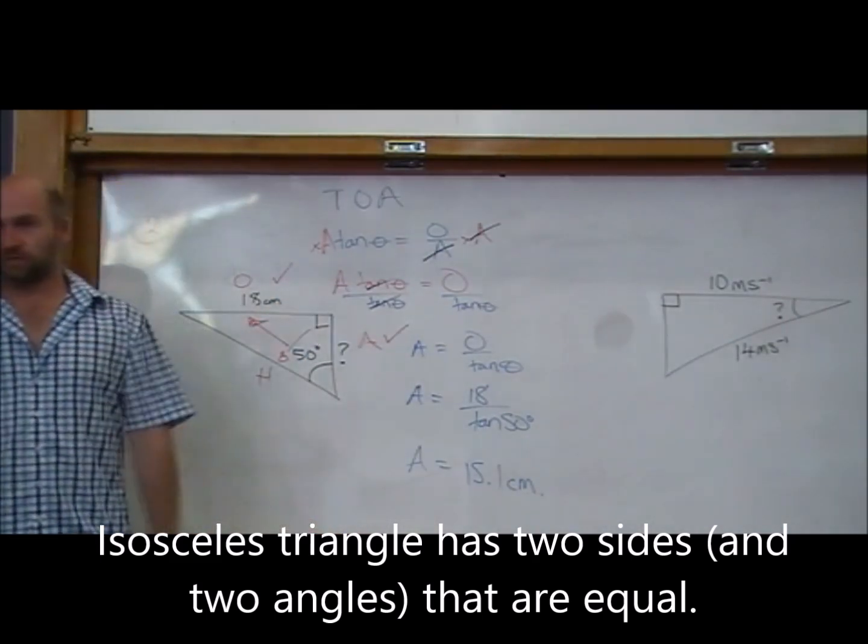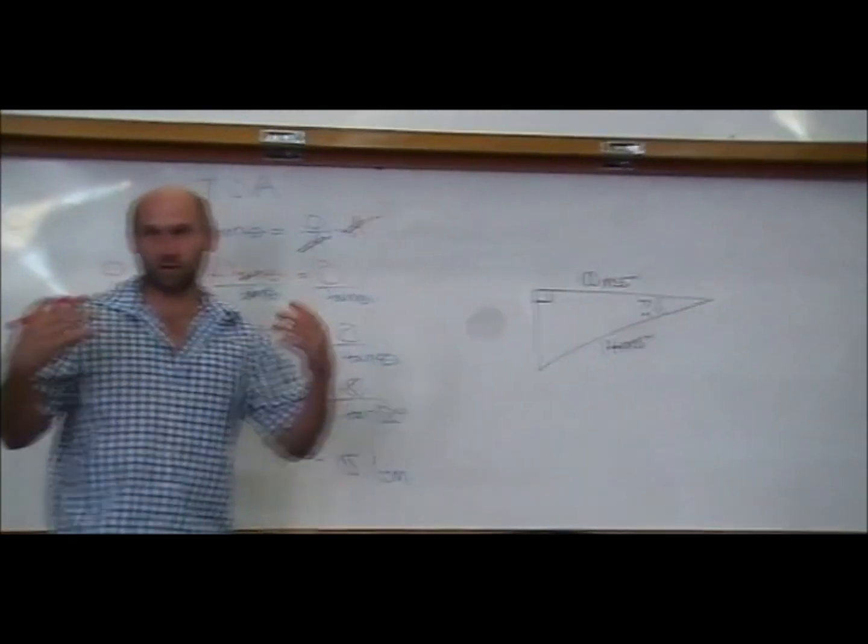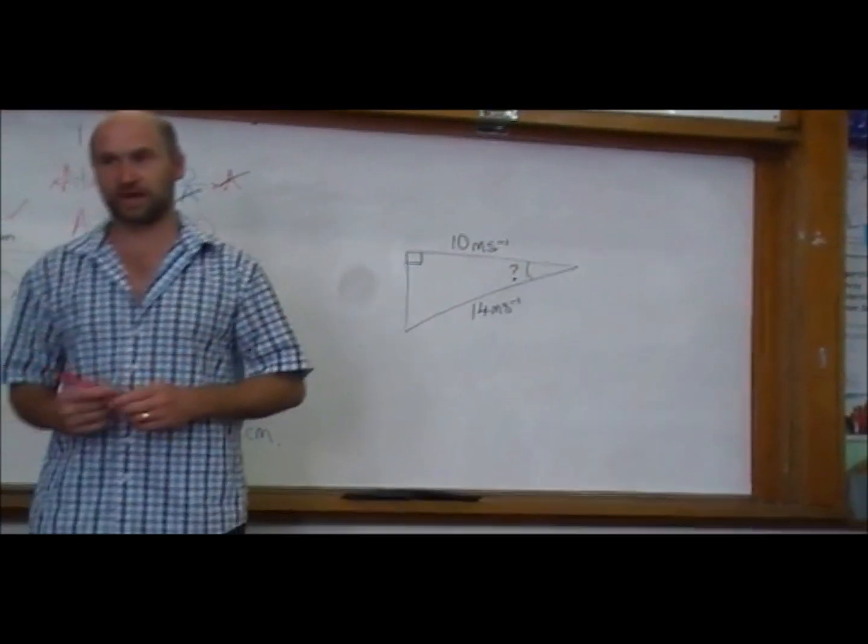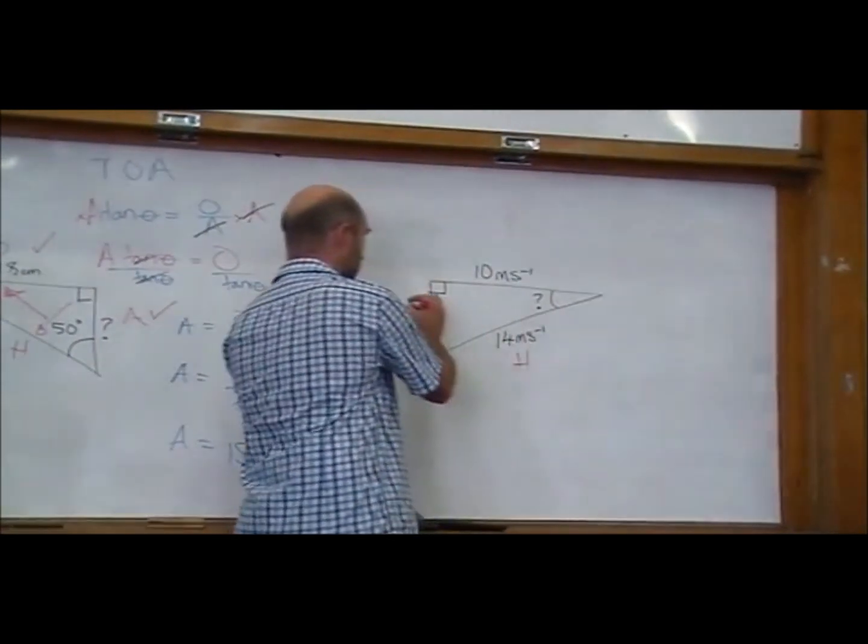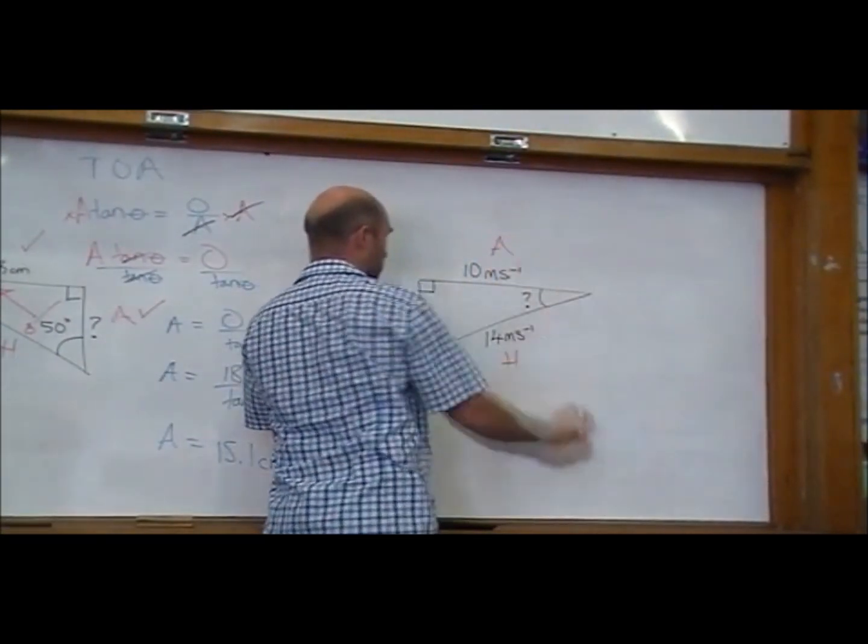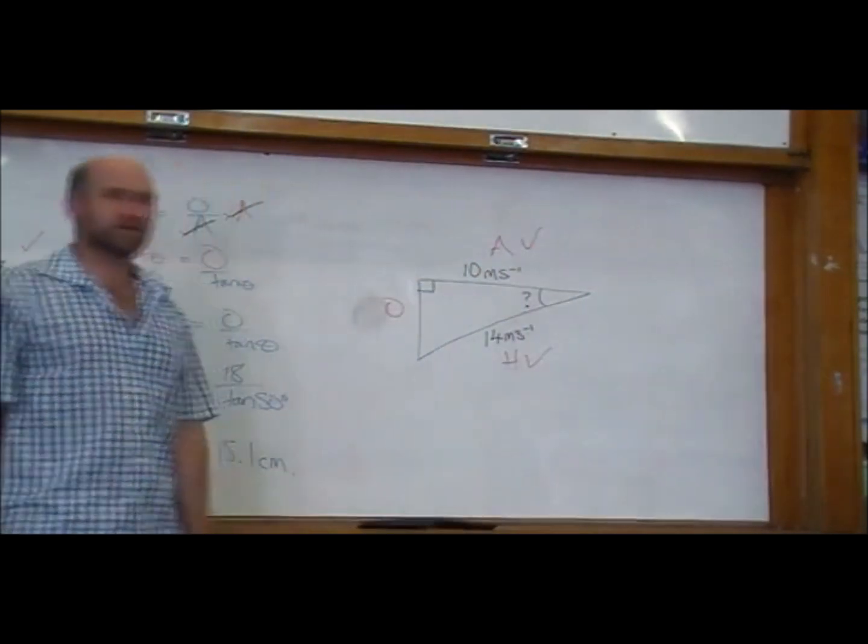Third example. This time we're up to finding the angle. So we're always going to start the same way. We're going to label up the H, the O, and the A on these right-angled ones. H, O, and A. And we've got H, and we've got A. We're trying to find the angle. Which trig function are we going to use?